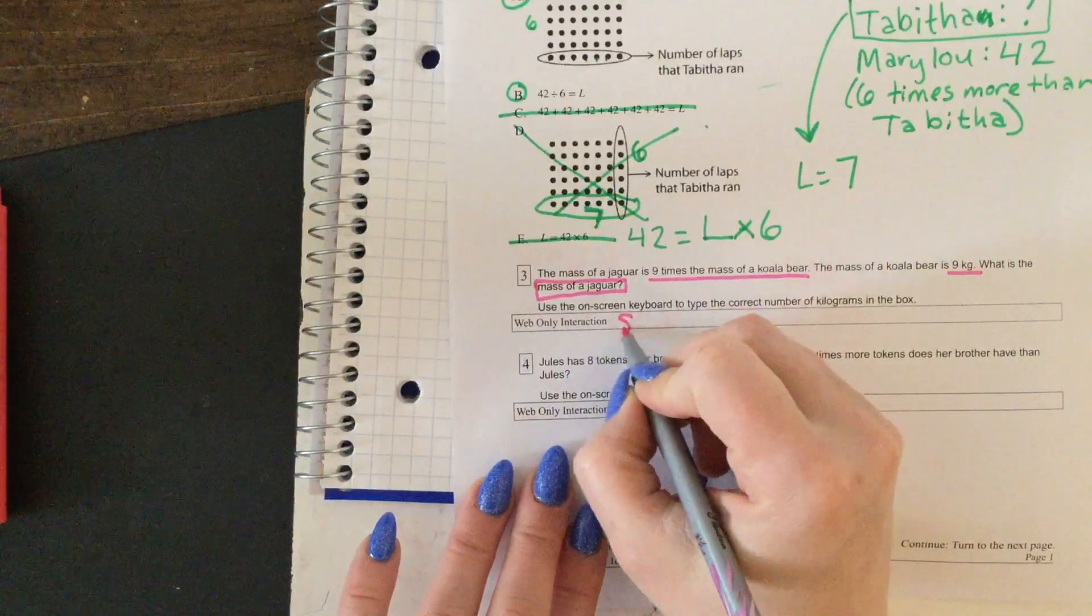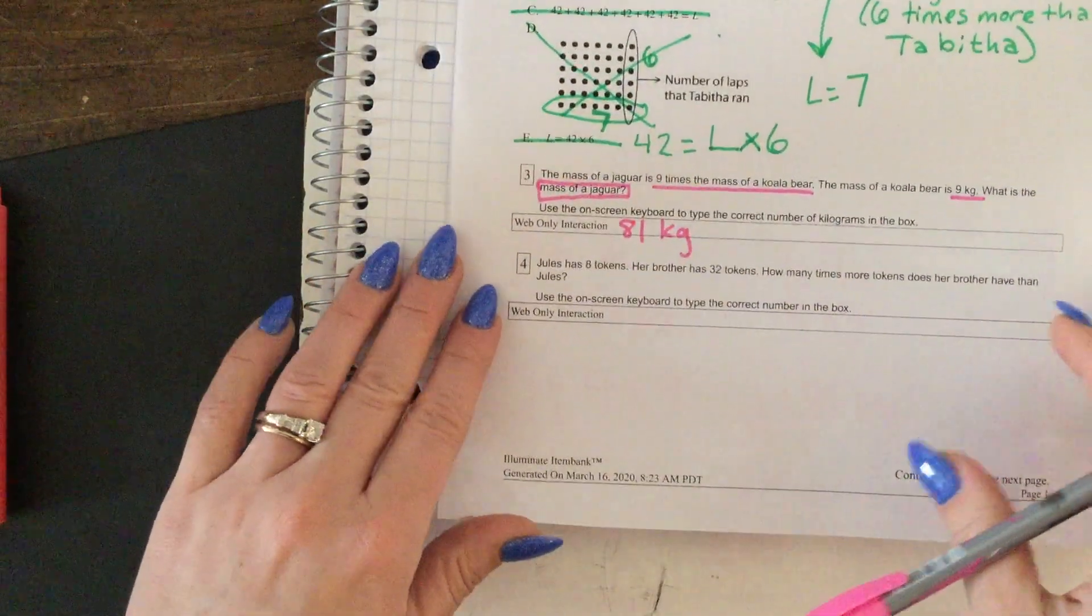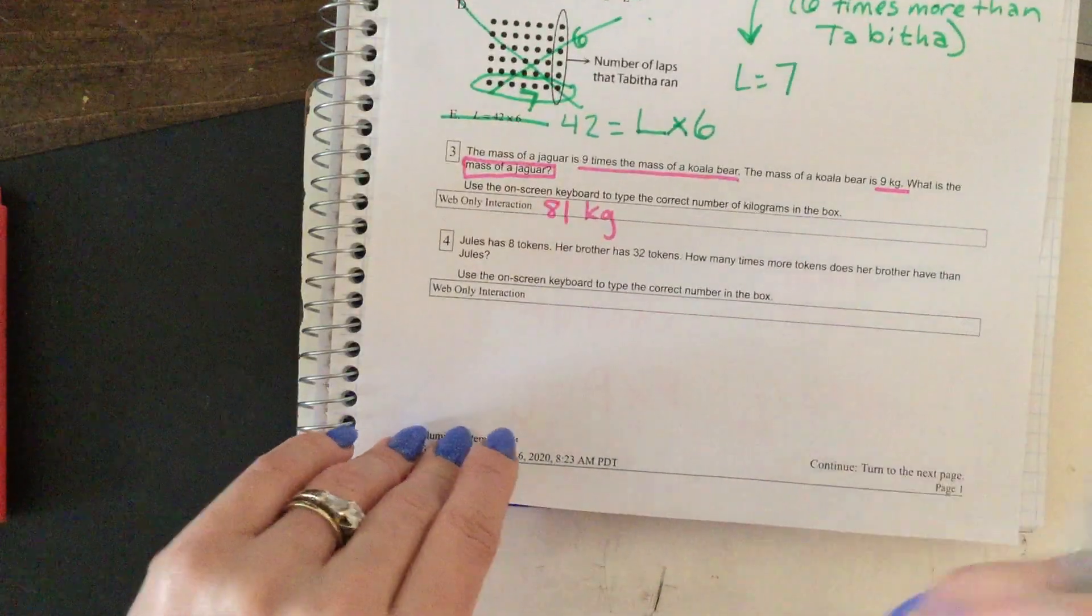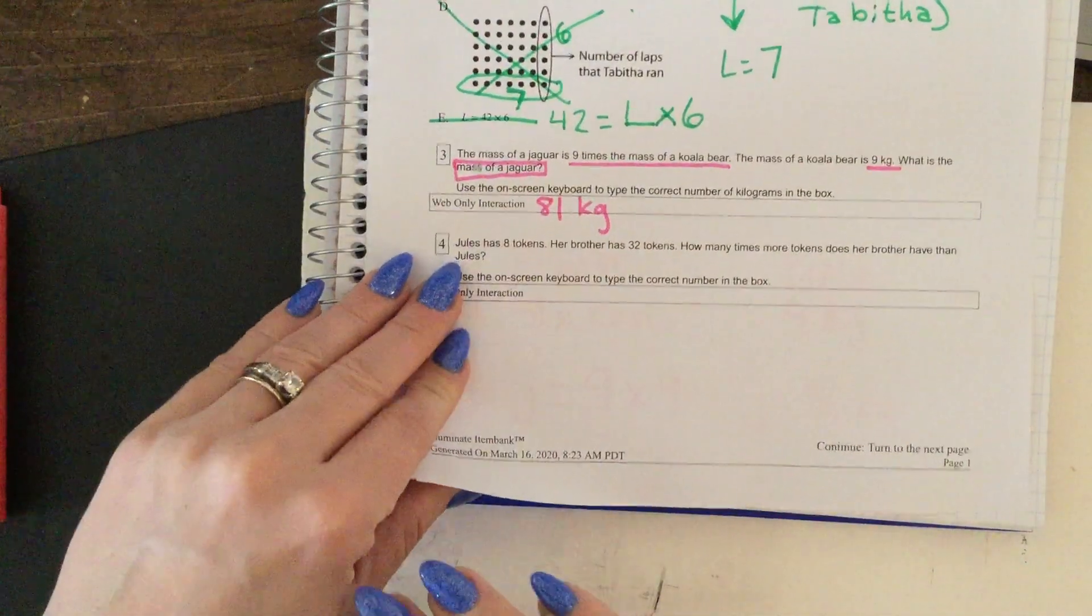So if you were typing this in, you would write 81 kg or 81 - either one will get you the right one on the typed answer. But if you're writing it down, please do the unit, because it's not 81 jaguars, it's 81 kilograms.